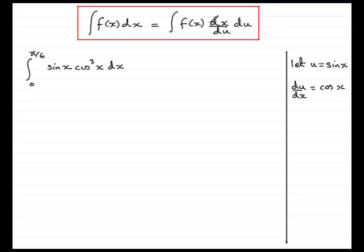We require dx/du, and dx/du is given by 1 over du/dx. So we have dx/du equals, in this particular example, 1 over cos x.